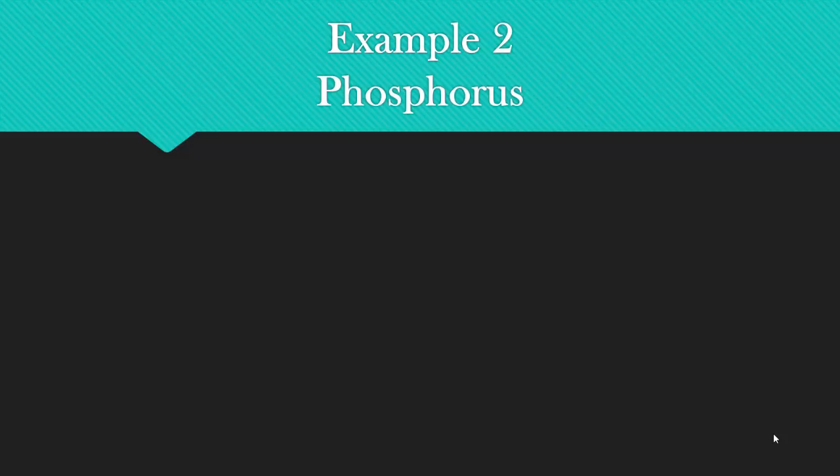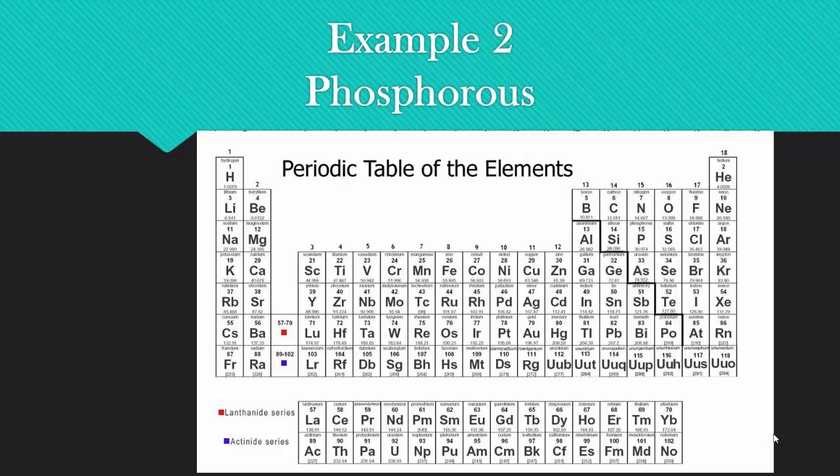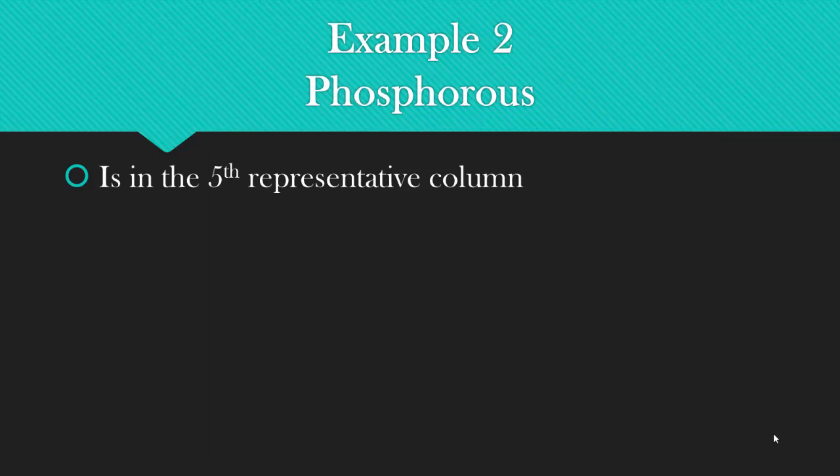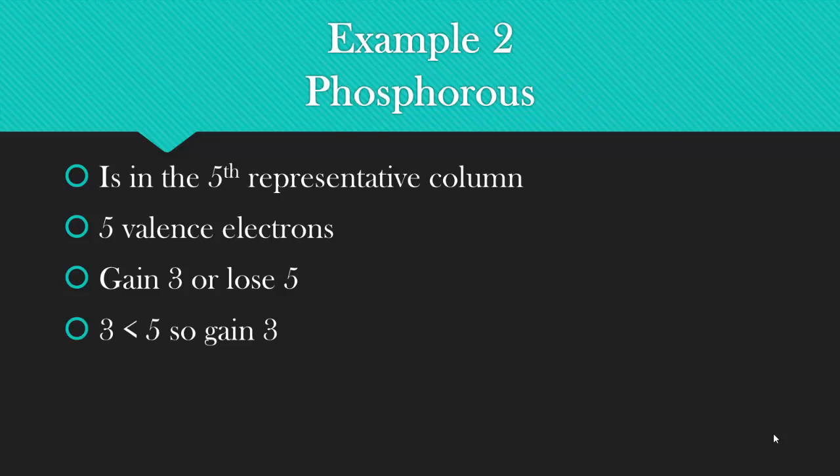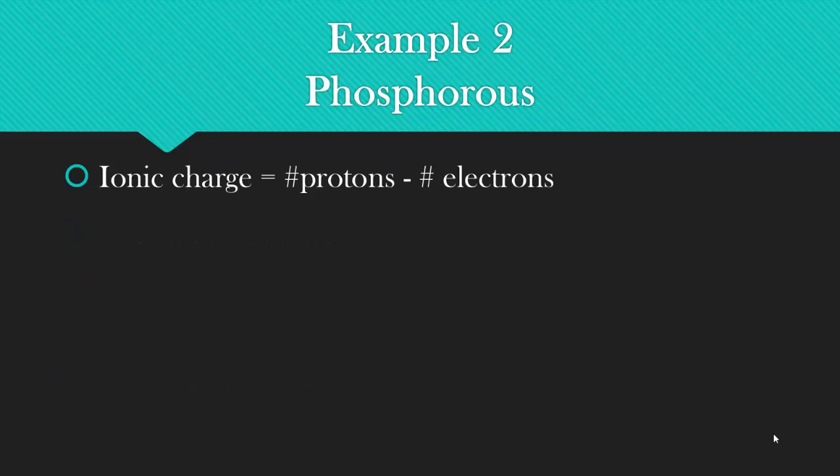Example two, phosphorus. Phosphorus has 15 protons, so the neutral atom has 15 electrons. It's here in the fifth representative column. Notice the atomic number is 15. It's in the fifth representative column, which means it has five valence electrons. Gain three or lose five to get the noble gas configuration. Three is less than five, so it's easier to gain three. 15 electrons plus three electrons is 18 electrons.